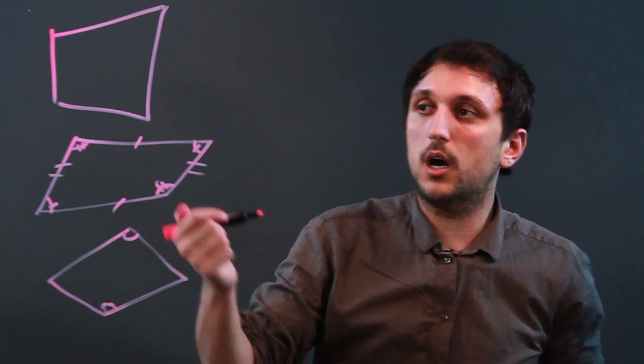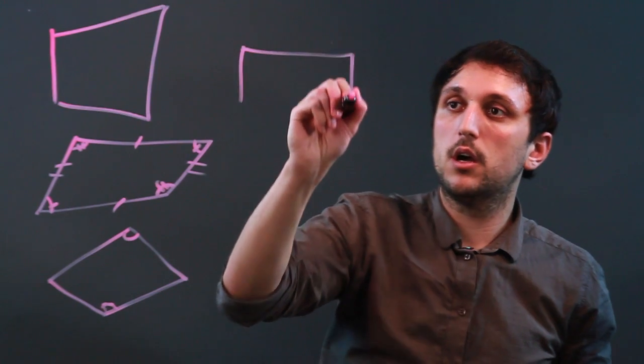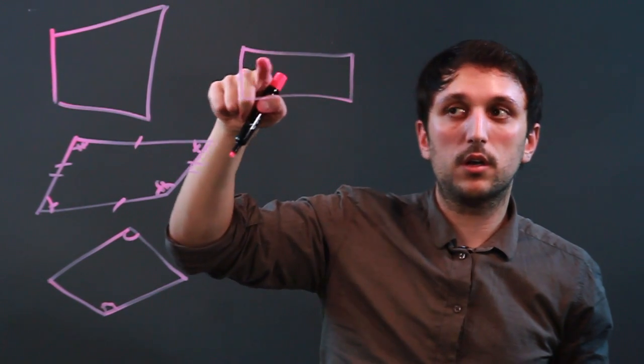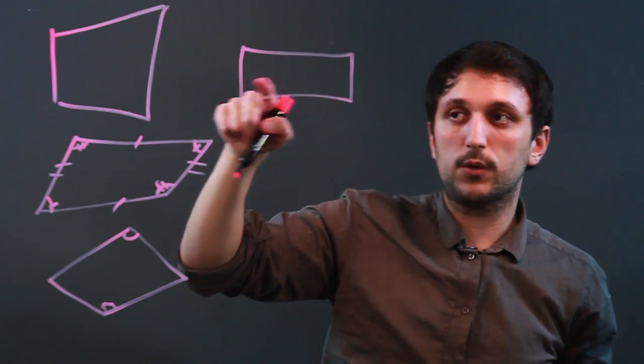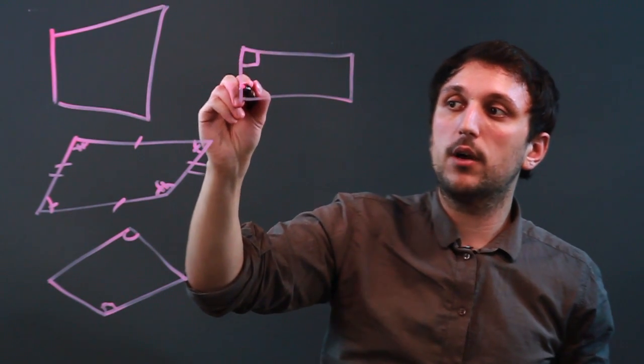Then we have rectangles, in which two sides are equal, these two sides are equal, and all four angles are 90 degrees.